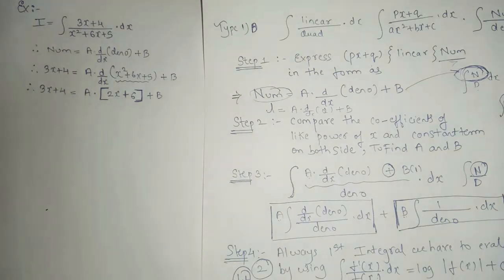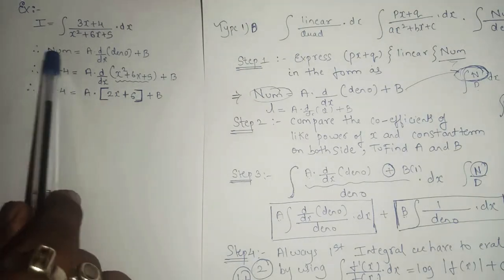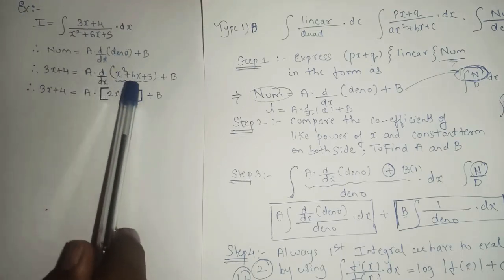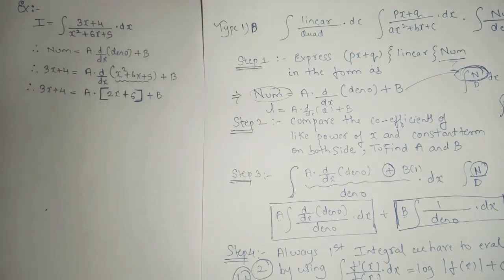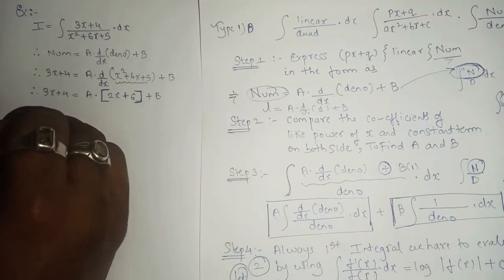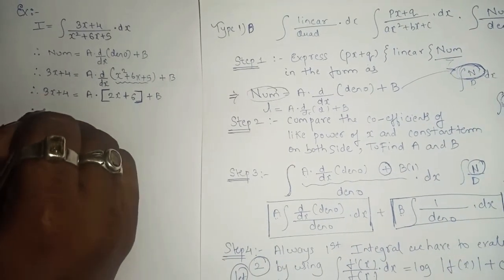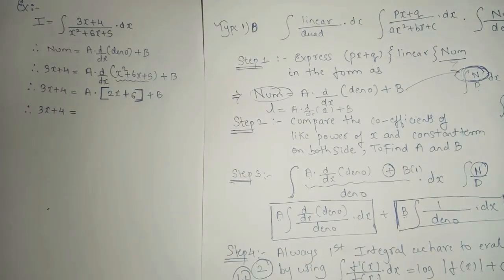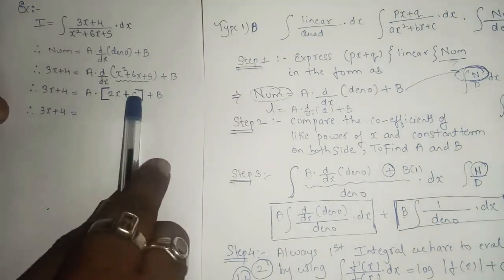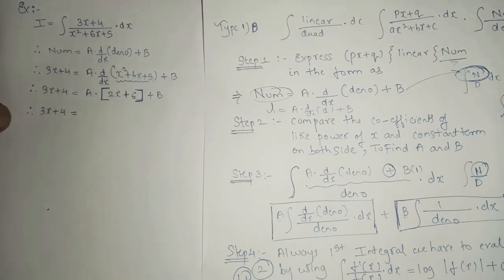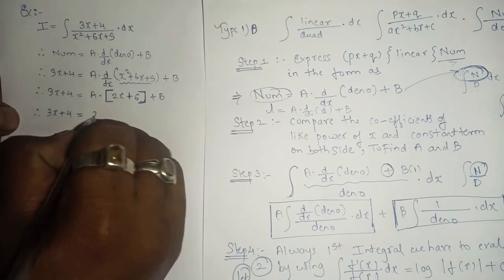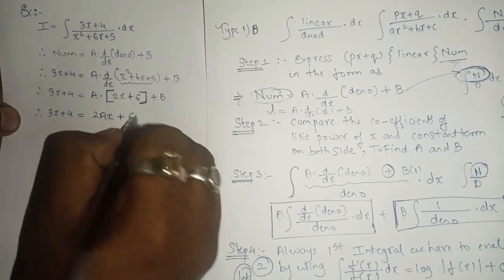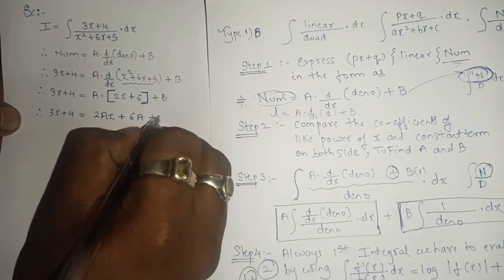To recap step one and two: first write the format replacing numerator as linear and denominator as quadratic, then find the derivative. After expanding, we get: 3x plus 4 equals 2Ax plus 6A plus B.